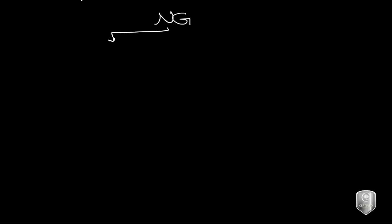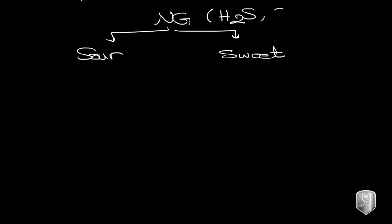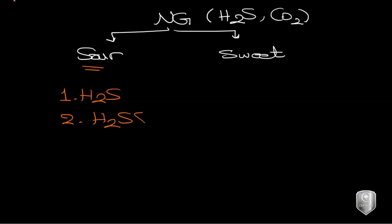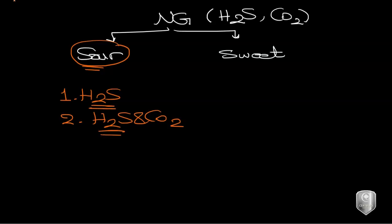First thing first: natural gas can be classified into sour natural gas or sweet gas. This classification depends on the presence of hydrogen sulfide, and in some cases carbon dioxide. If the gas is sour, it has H₂S — or H₂S and CO₂ together. The presence of carbon dioxide makes it more sour.